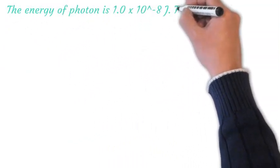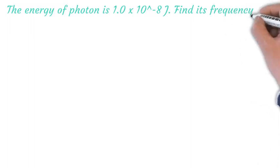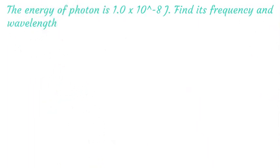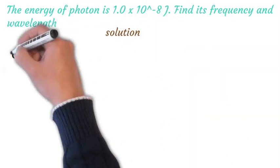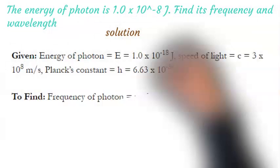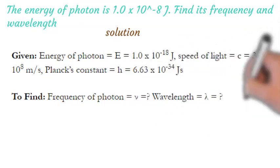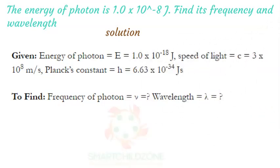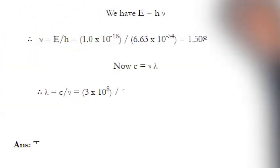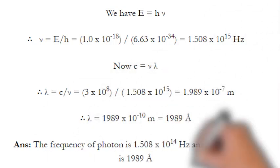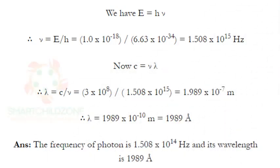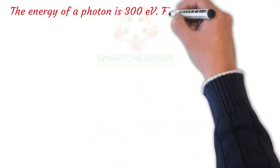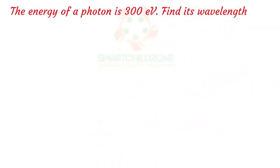The energy of a photon is 1.0 × 10⁻⁸ joules. Find its frequency and wavelength. Also, the energy of a photon is 300 electron volts — find its wavelength.